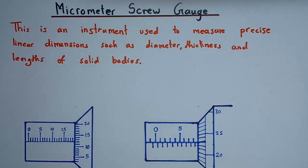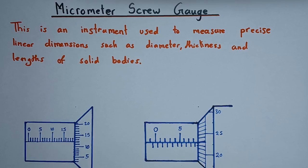Hi everyone and welcome to this video. Today we'll be looking at the micrometer screw gauge and how to read measurements on it. This is an instrument used to measure precise distances — mainly the diameter or thickness of something — for small objects that cannot be easily measured by a ruler.